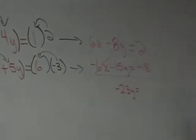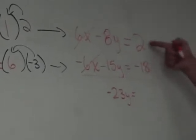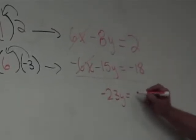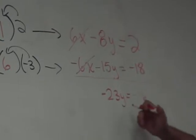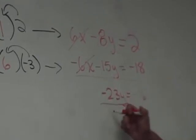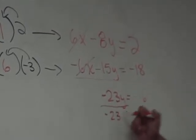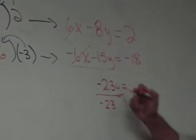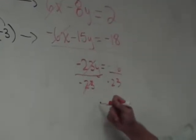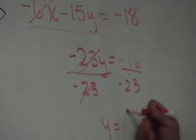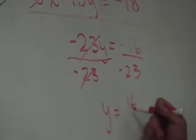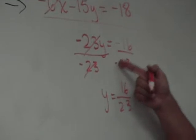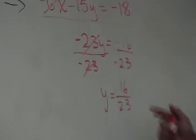Now we're going to have fractions, and that's okay. 2 minus 18 equals negative 16. Just reduce to lowest terms. You divide both sides of the equation by negative 23. Y equals 16 over 23. The negative signs cancel each other.